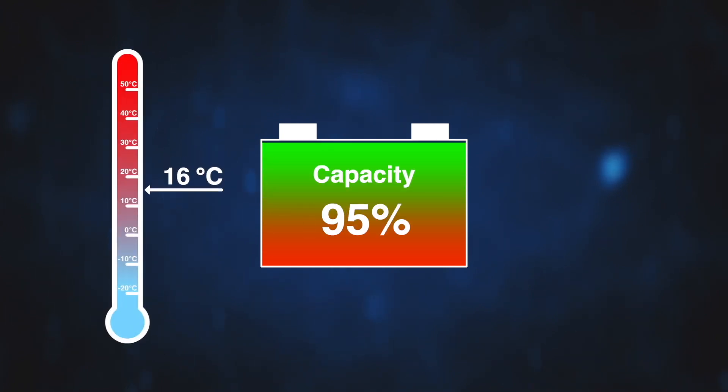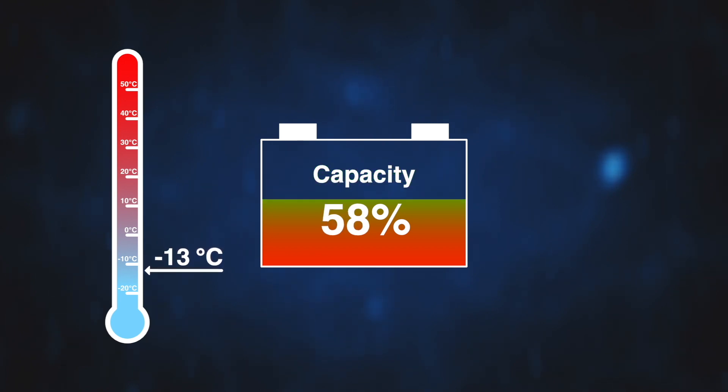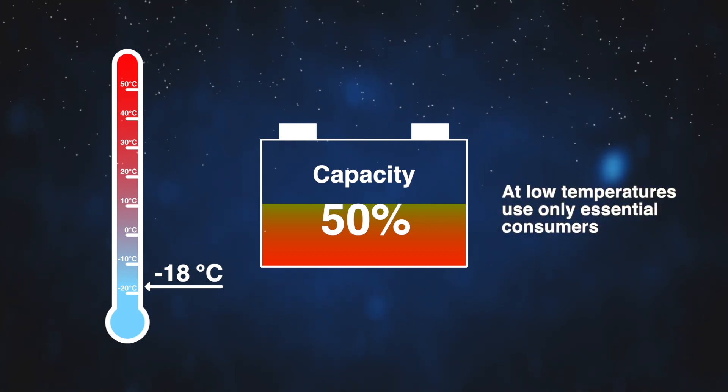A temperature drop from 20 degrees C to minus 18 degrees C reduces battery capacity by approximately 50%. At low temperatures pay special attention to the battery's condition and ensure only essential electrical consumers are used when the vehicle isn't in operation.